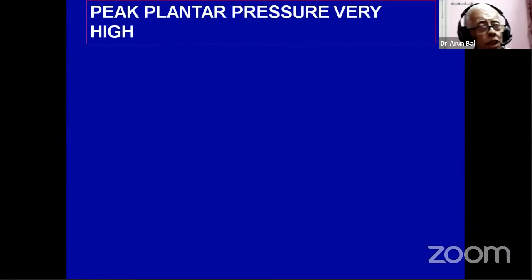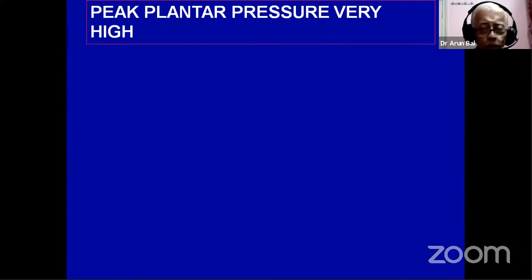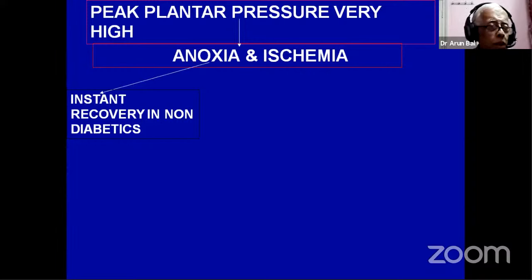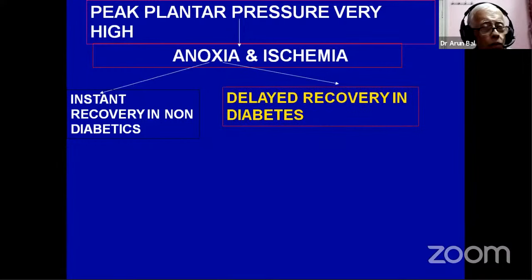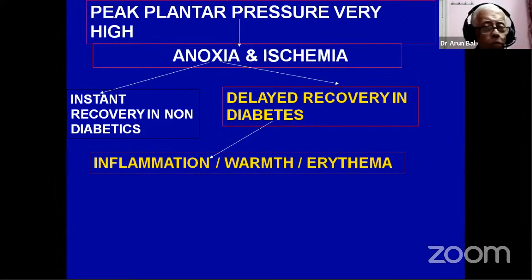The peak plantar pressure at the takeoff or propulsion stage is very high — almost 600 kilopascals in every human being from early to elderly age. At 120 mmHg systolic pressure, about 15 kilopascals, all arterioles are shut off. At 6 kilopascals, capillary circulation is completely obliterated. So every human foot at propulsion undergoes anoxia and ischemia, but there is instant recovery because of good metabolic control, sensory input, and motor control.